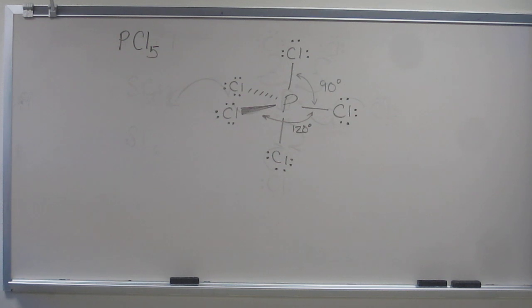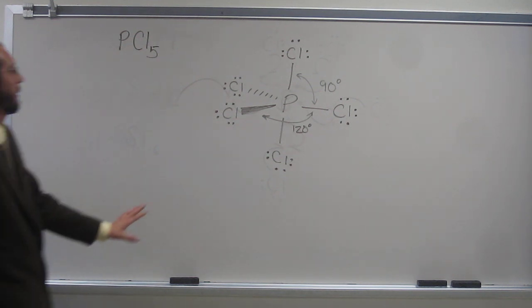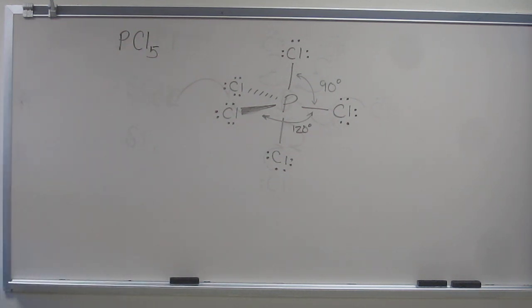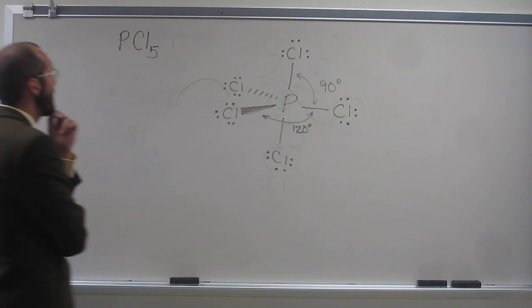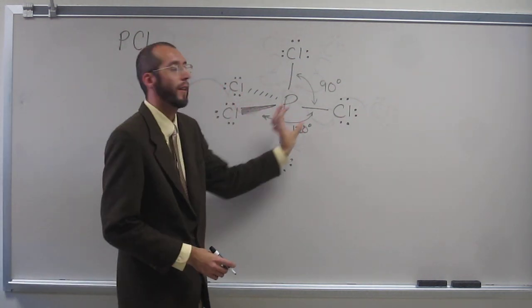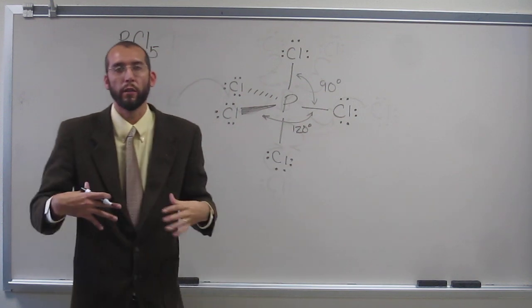So are there any questions about this one? So are the three CLs in the plane with the P, is that because P should have three, should have three CLs? How it's supposed to be, but it has five. It has nothing to do with that. It's just about how far away these electron groups want to push each other. It has nothing to do with what it's supposed to do previously.